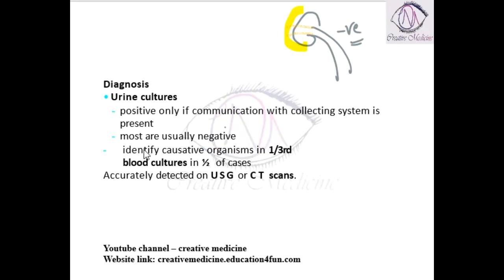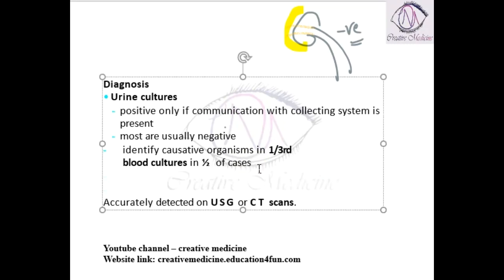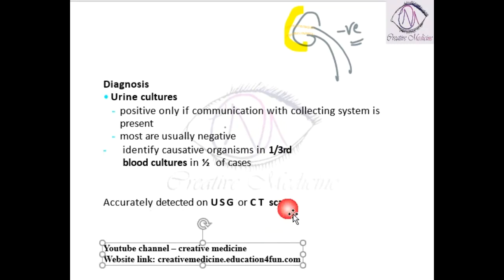The causative organism can be identified in one third of cases by urine culture, whereas blood culture can be positive in half of the cases. Accurate detection is achieved mainly by ultrasonography, and CT scan helps in precise identification.